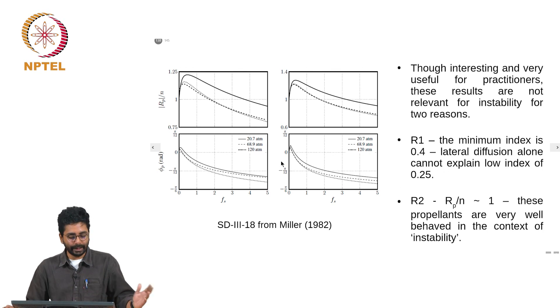Response functions can be calculated for a variety of compositions by extending the code. What I want to emphasize is that though very interesting and very useful, these results are not very relevant for instability for two reasons. The reason one is that the maximum index that we could predict with this approach is only 0.4. But remember that propellant compositions that are used have index as low as 0.2, 0.25. We still do not know how that is achieved. Just accounting for lateral diffusion brings down the index from 0.8 to 0.4, not below that.